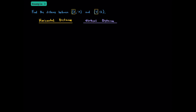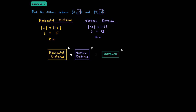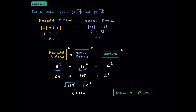Now let's try example 3. To find the horizontal distance, we add the absolute values of the x-coordinates: the absolute value of 3 plus the absolute value of negative 5 gives us 3 plus 5, which is 8 units. For vertical distance, we add the absolute value of negative 2 plus the absolute value of 13 — that's 2 plus 13, which is 15 units. Substituting into the formula: 8 squared plus 15 squared equals C squared. 64 plus 225 is 289. Taking the square root, C equals 17 units.